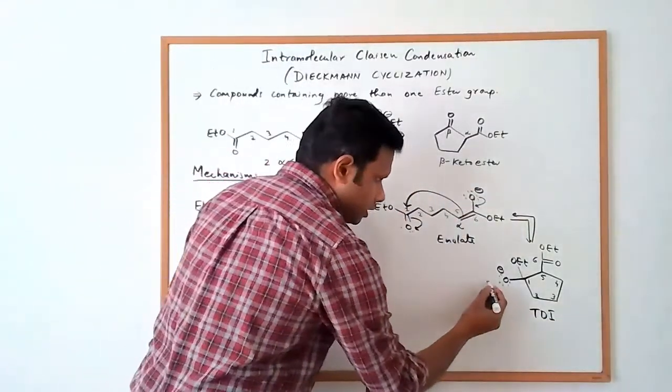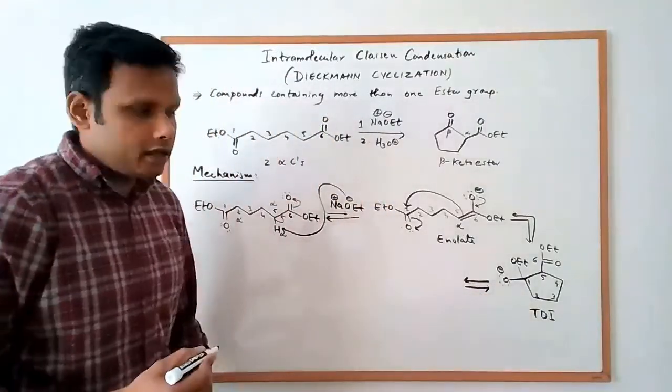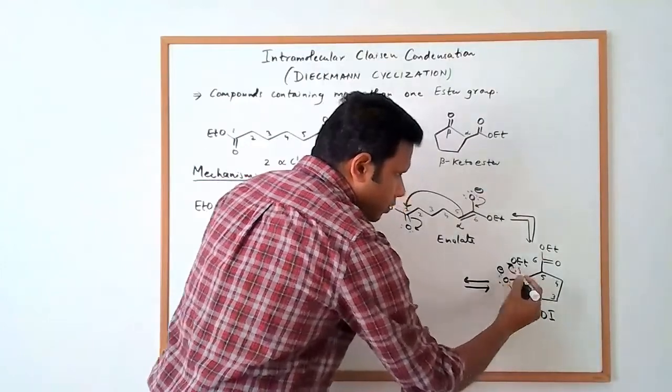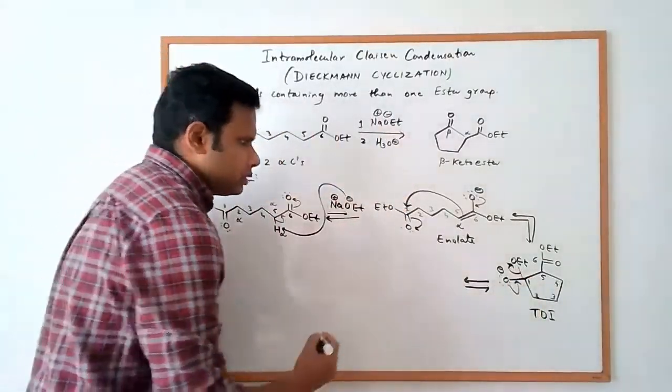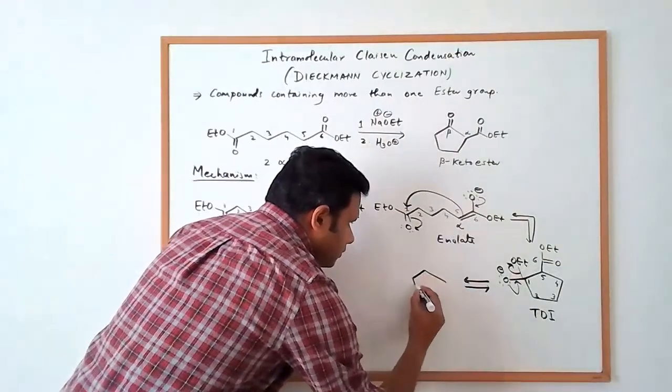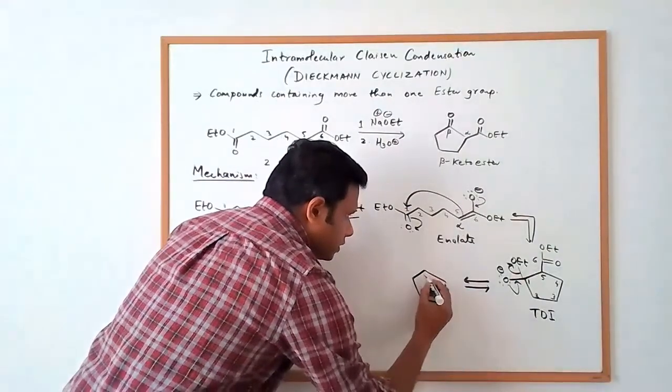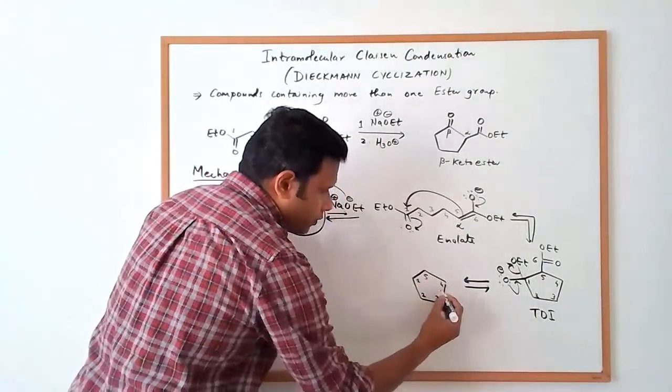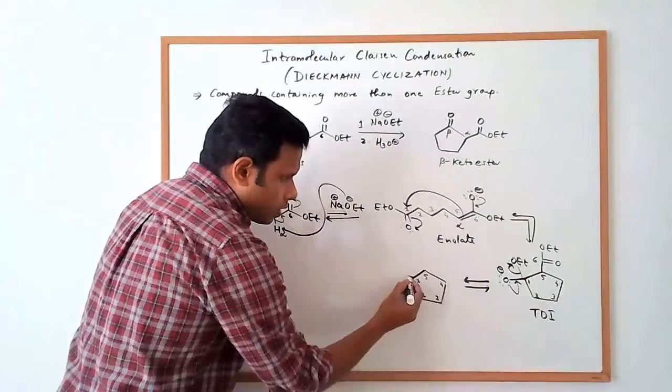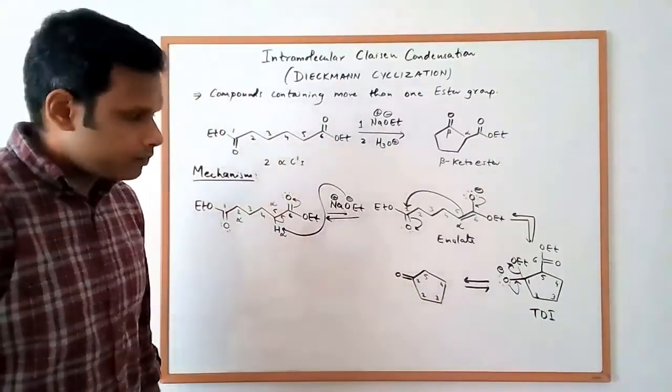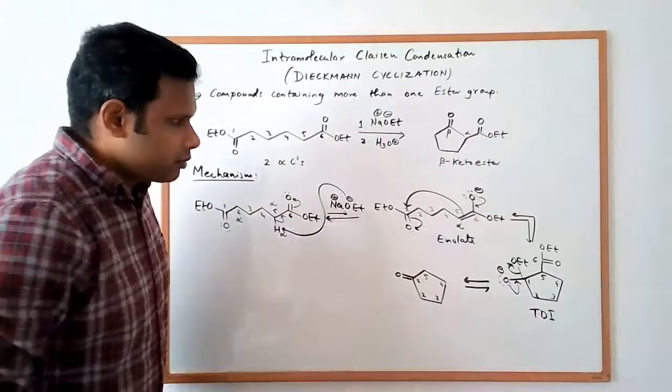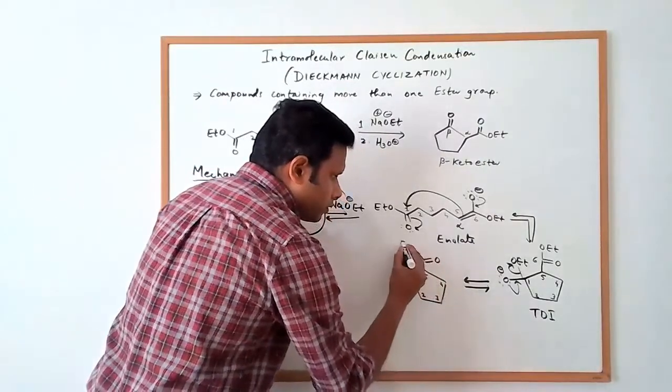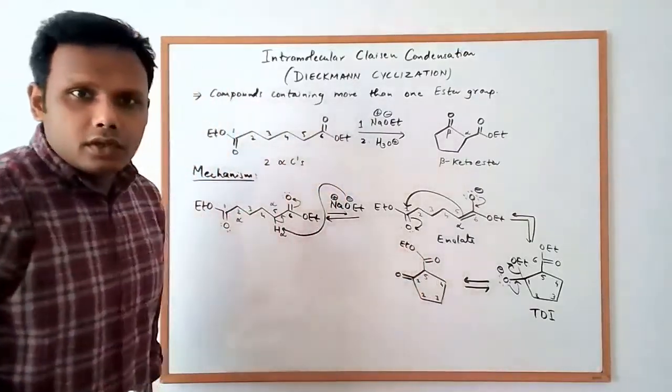OEt. Now this tetrahedral intermediate can collapse. And so the lone pair on the oxygen comes down and the OEt is going to get kicked out. And that's going to give us 5, 1, 2, 3, 4. On carbon number 1, we now have a double bond. We got the double bond back. And on carbon 5, we have a double bond O and OEt. So we got that product.